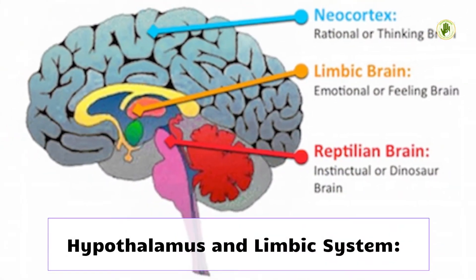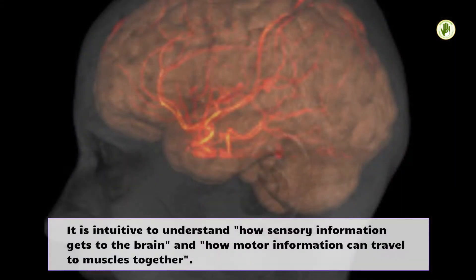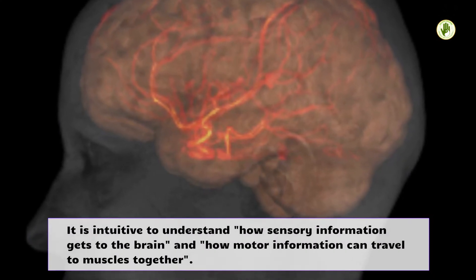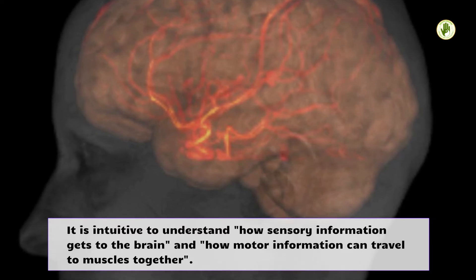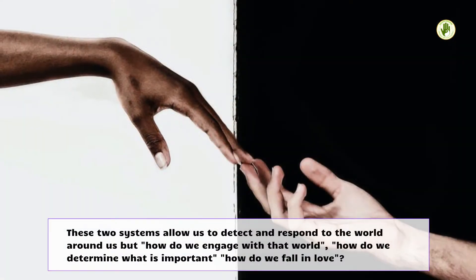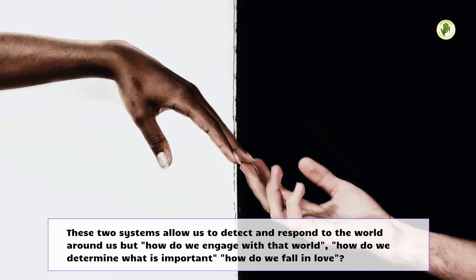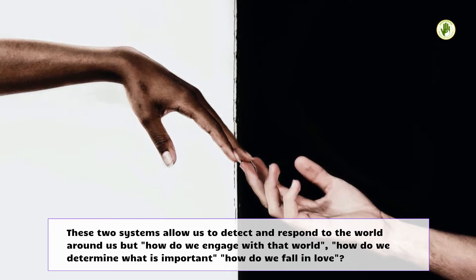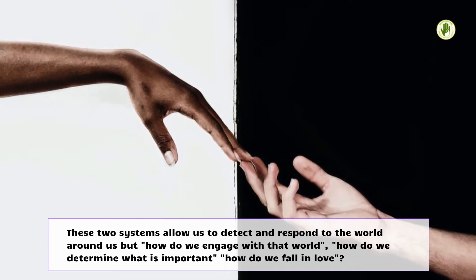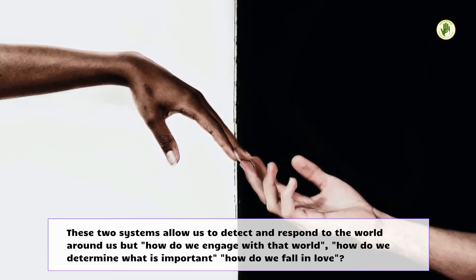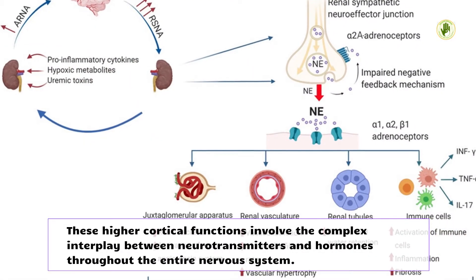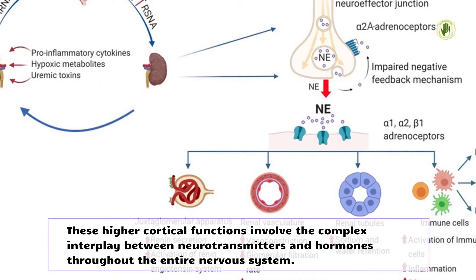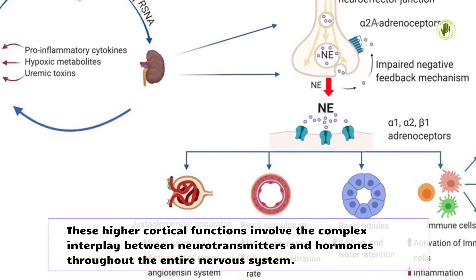The hypothalamus and limbic system. It is intuitive to understand how sensory information gets to the brain and how motor information travels to muscles. These two systems allow us to detect and respond to the world around us, but how do we engage with that world? How do we determine what is important? How do we fall in love? These higher cortical functions involve the complex interplay between neurotransmitters and hormones throughout the entire nervous system.